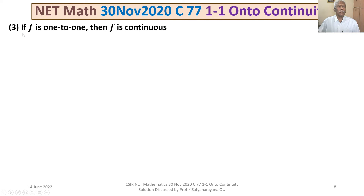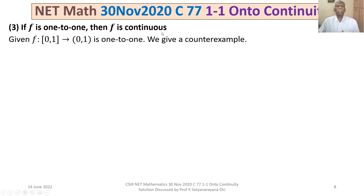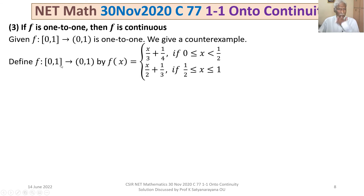Option 3: the statement is, if f is 1-to-1, then f is continuous. We show this is not true by giving a counterexample. We construct a function which is 1-to-1 but not continuous. Define f: [0,1] → (0,1) as the piecewise function: f(x) = x/3 + 1/4 if 0 ≤ x < 1/2, and f(x) = x/2 + 1/3 if 1/2 ≤ x ≤ 1.